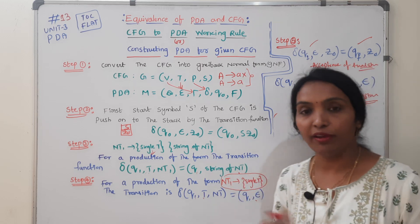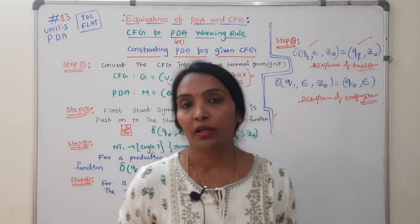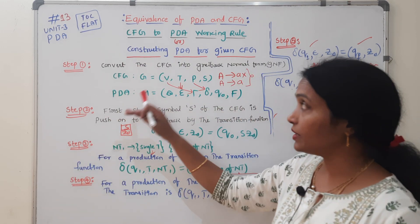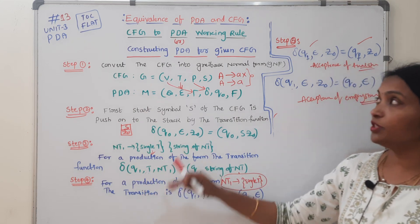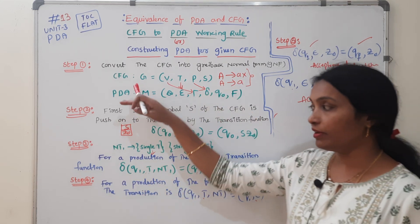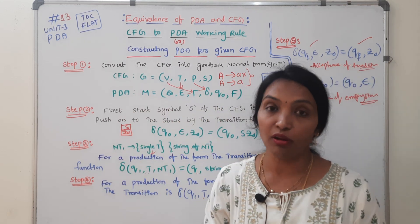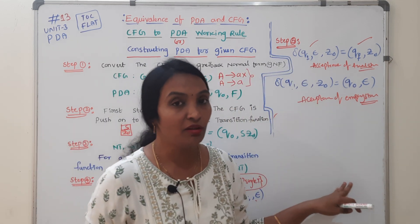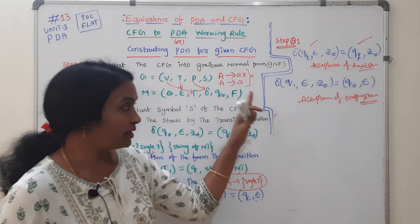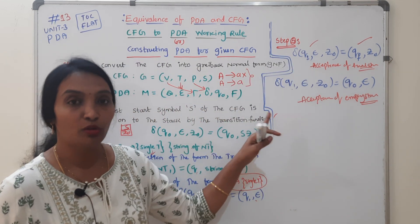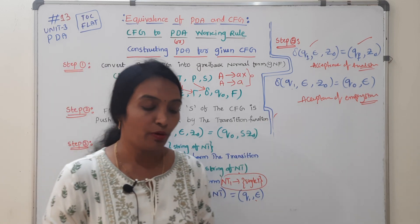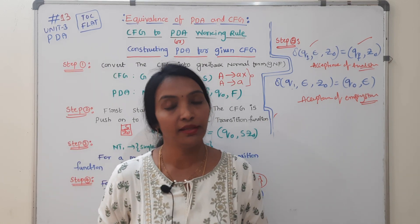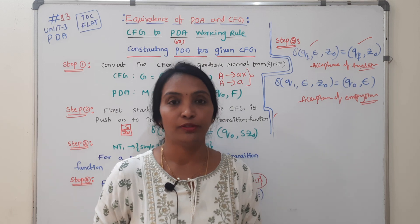This is the final working rule. In this case, we use 5 steps for CFG to PDA conversion. In the next video, we will discuss the problems clearly. First, read and try to understand what is what. Then after that, we will do the problems. If you like this video, please share, like, and comment. Thanks for watching.